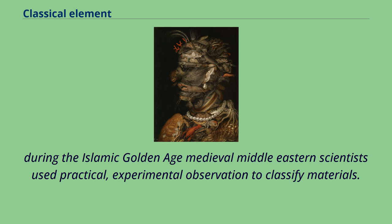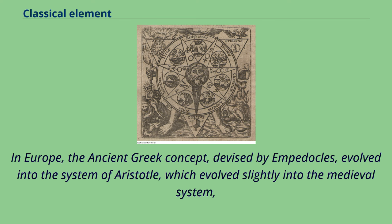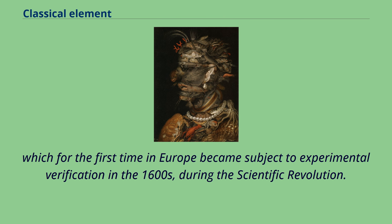During the Islamic Golden Age, medieval Middle Eastern scientists used practical, experimental observation to classify materials. In Europe, the ancient Greek concept devised by Empedocles evolved into the system of Aristotle, which evolved slightly into the medieval system, which for the first time in Europe became subject to experimental verification in the 1600s, during the scientific revolution.